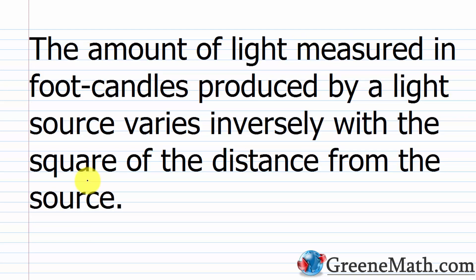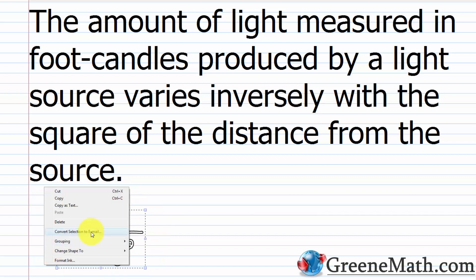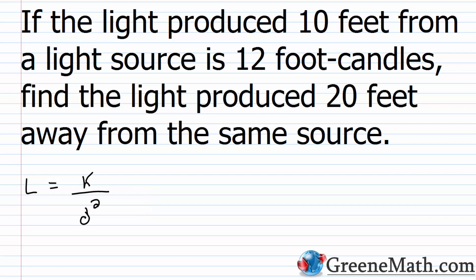For the final word problem: the amount of light measured in foot candles produced by a light source varies inversely with the square of the distance from the source. Let L be the amount of light and D be the distance. So L equals k over D squared. If the light produced 10 feet from the source is 12 foot candles, we want to find k and then figure out the second scenario.